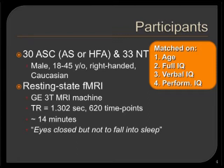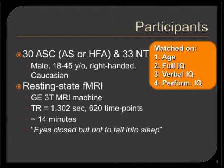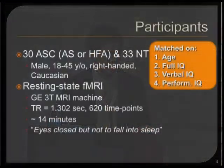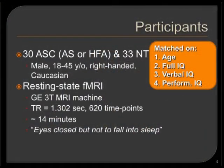We have 30 autism spectrum condition participants diagnosed with Asperger's syndrome or high-functioning autism, and 33 neurotypical controls. Their diagnoses were all confirmed by ADIR. They were matched by age and all scales of IQ. We took resting state functional MRI with a very long scanning session — about 14 minutes — taking 620 time points in order to capture very low frequency oscillations of the brain. All participants were instructed to keep their eyes closed but not fall asleep, and all participants are male.